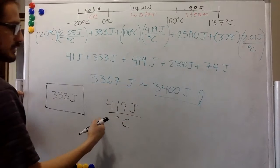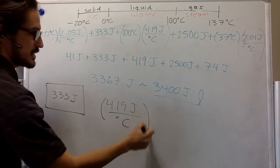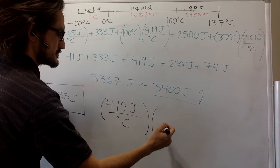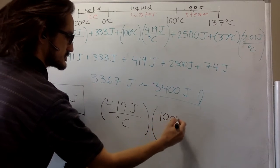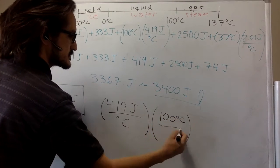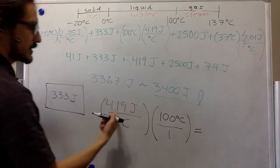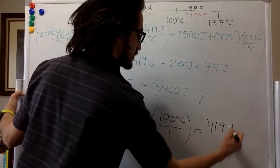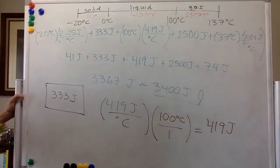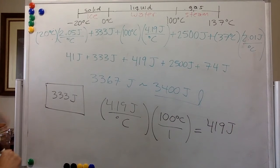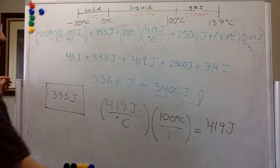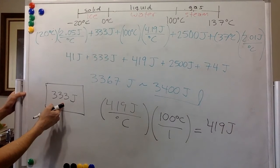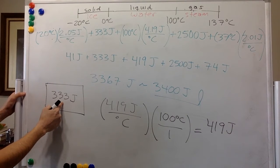one gram will give you 419 joules of energy. So that is more than enough to melt the ice. You only need 333.